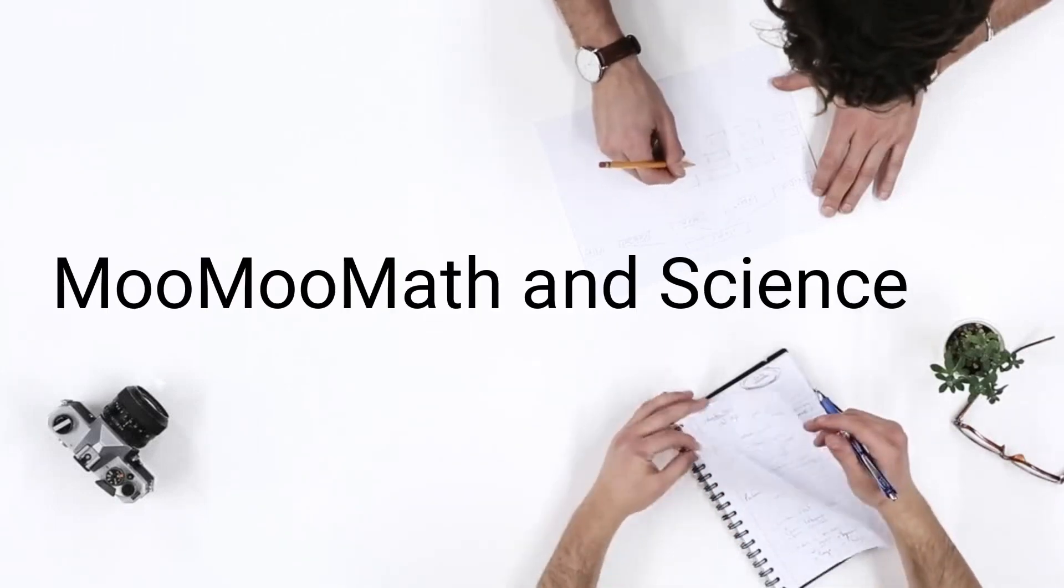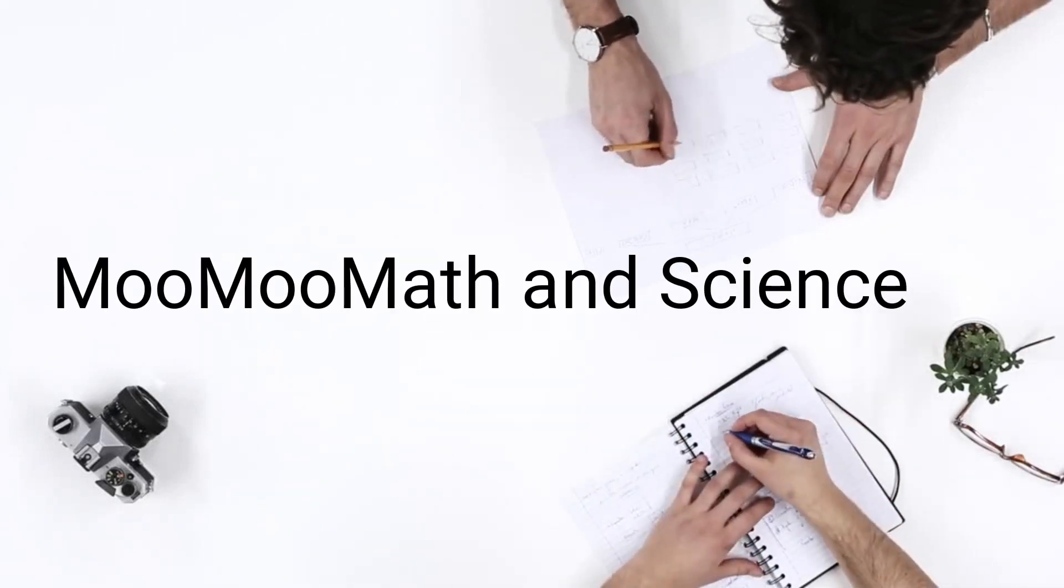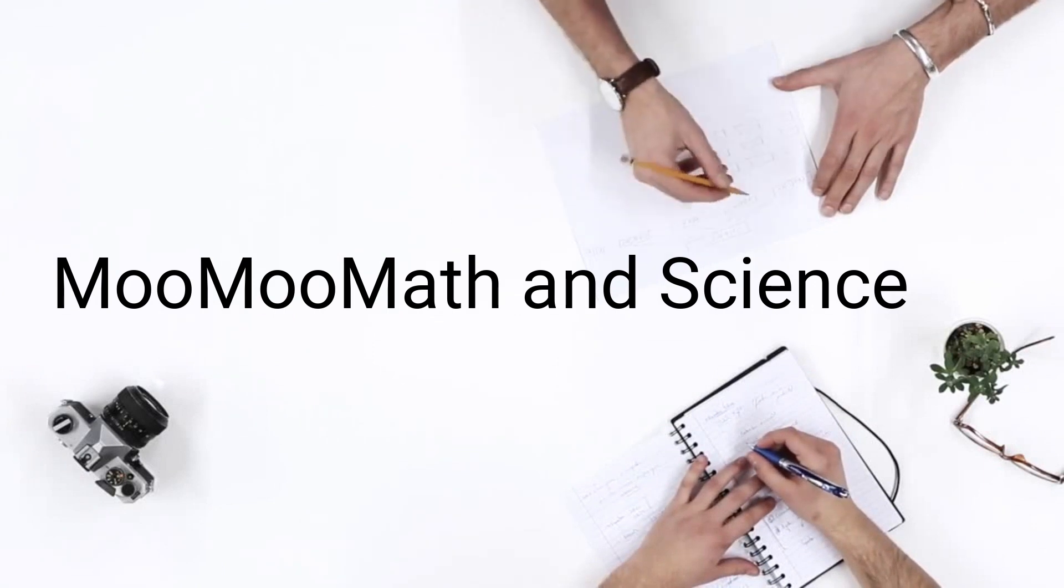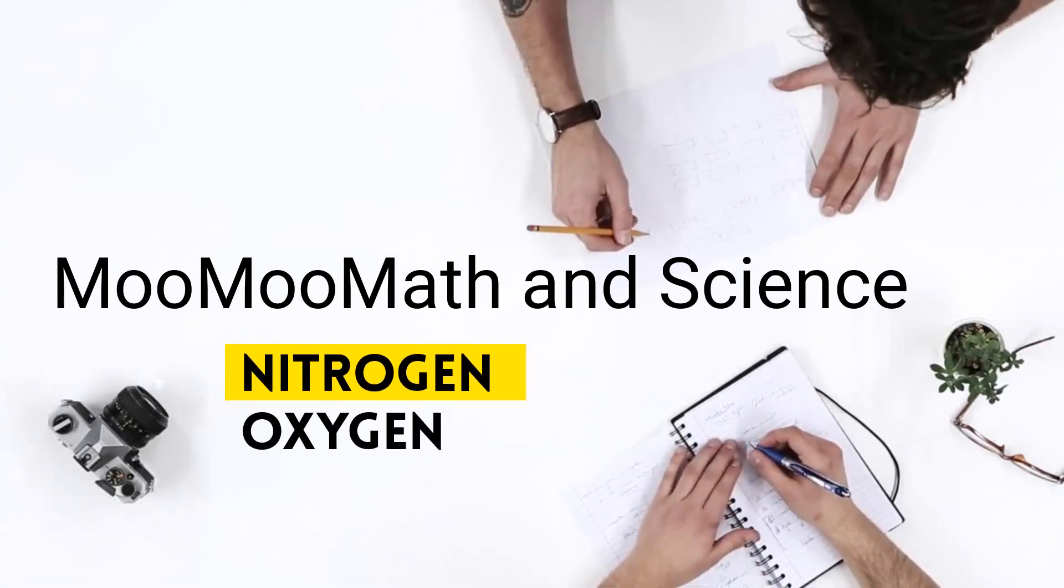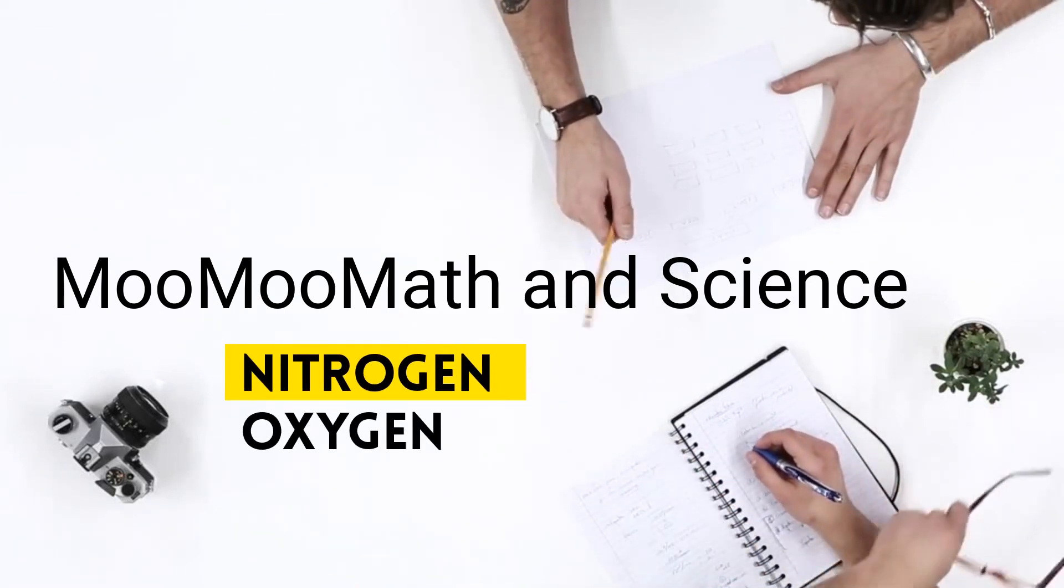Welcome to Moo Moo Math and Science. In this video, I'd like to show the electron configuration of nitrogen and oxygen, and I'll be using the diagonal rule.